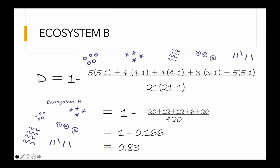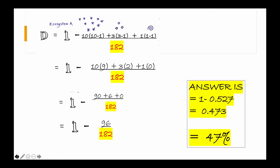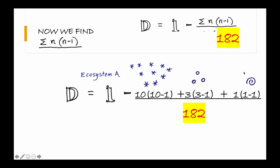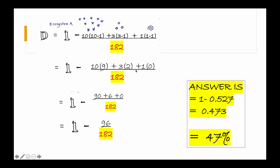Going back to Ecosystem A, notice that it has only one swirl. That one swirl results in 1 multiplied by (1−1), which equals 0 — it doesn't count in the biodiversity calculation. This means that when you observe only one organism of a particular species, it's treated as a singleton or a fluke — like one butterfly passing through — and is assumed not to actually live there. But if you see five butterflies of the same species, the biodiversity calculation would not eliminate it.